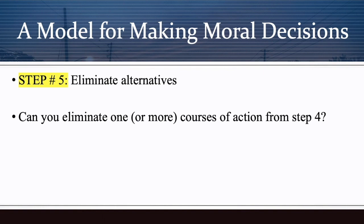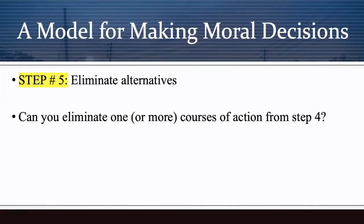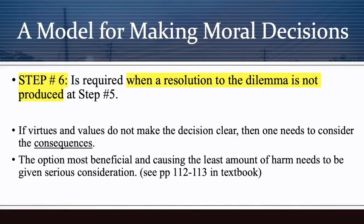Step five — eliminate the alternatives. Can you eliminate one or more courses of action from step four? The answer is very difficult. What choice would you get rid of? You don't throw the switch — five die; or you throw the switch — two die. Can you make the choice? Here is where we get to step six, because I would assume that you can't make the choice — you just don't know what to do.